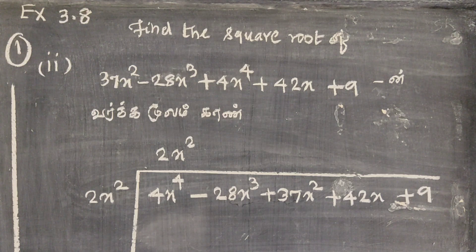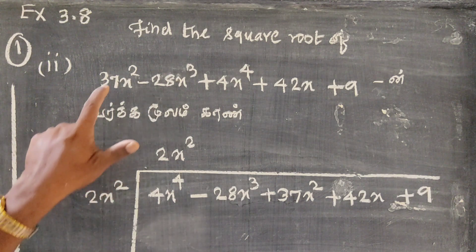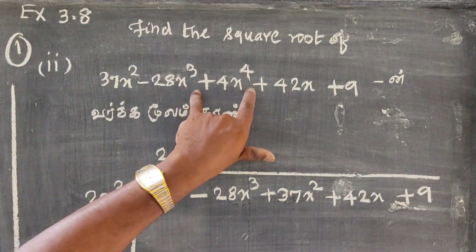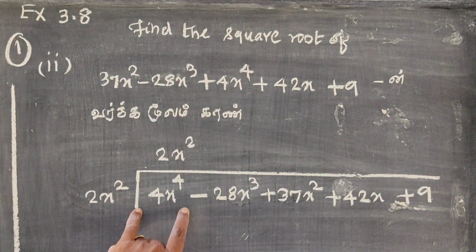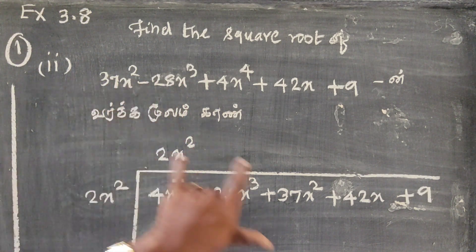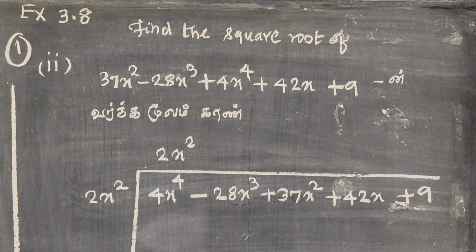First, let's look at the problem. The highest power here is 4x⁴, so we arrange in descending order: 4x⁴ minus 28x³ plus 37x² plus 42x plus 9. We apply Standard Formula 11 for this.